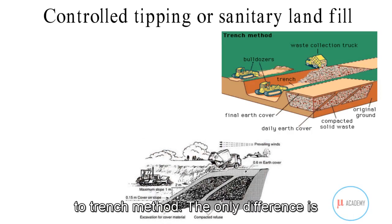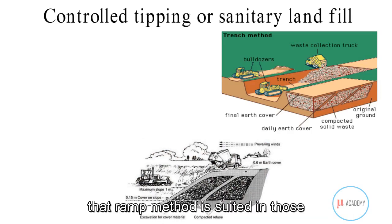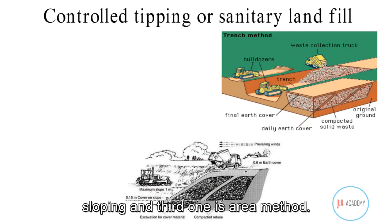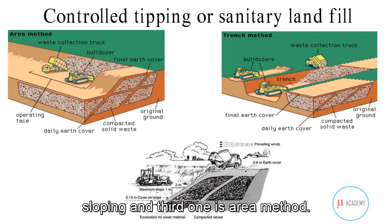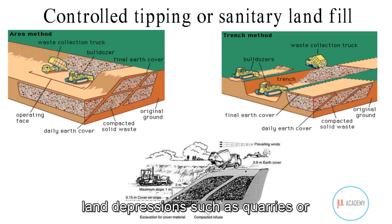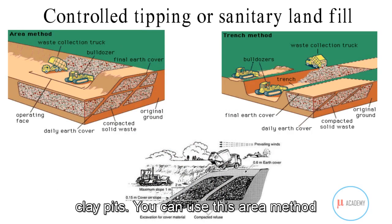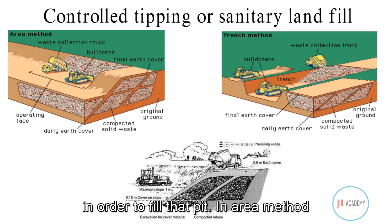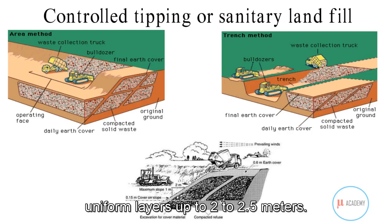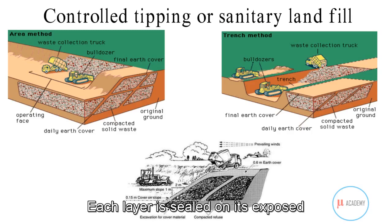The ramp method is similar to the trench method, but is suited for places where the terrain is moderately sloping. The area method is used to fill land depressions such as quarries or clay pits. In the area method, refuse is deposited and compacted in uniform layers up to 2 to 2.5 meters each.